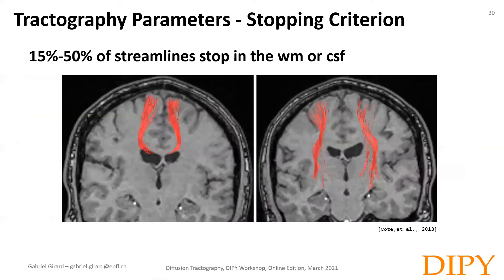Another important thing to know is that although we are using an accurate white matter mask for tractography, it is very likely that a large fraction of the reconstructed streamlines will either end in the white matter or in the CSF. This varies with the quality of the diffusion data and the tractography algorithm, but on clinical data you should expect somewhere between 15% to 50% of streamlines having non-gray matter ending locations.